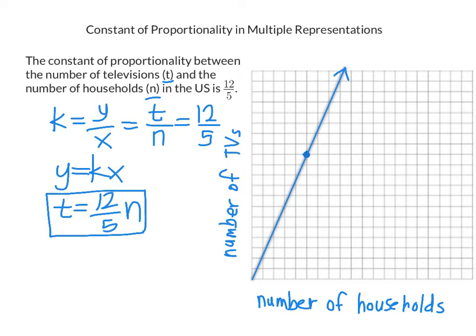Next, we want to predict a number based on a given value. For instance, if a store has 108 televisions for sale, how many households would that serve? We plug in t = 108: 108 equals 12 fifths times n. Now we're solving for the number of households.